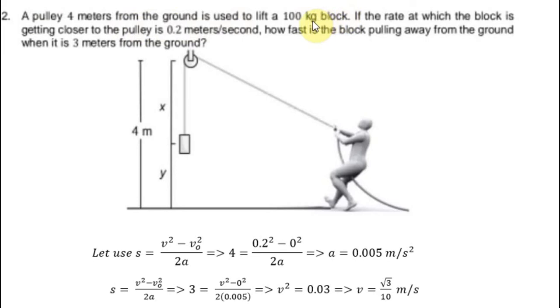The pulley is used to lift a 100 kilogram block, and the rate at which the block is getting closer to the pulley is 0.2 meters per second. How fast is the block pulling away from the ground when it is 3 meters from the ground?